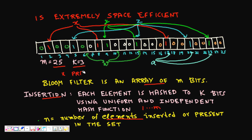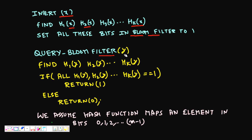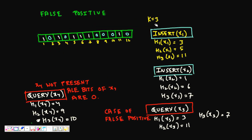Now these bits are set. To query whether x is present, we hash the value and check the bits. For insertion of element x: we compute h1(x), h2(x), ..., hk(x), which give numbers from 1 to m, and set those bits to 1. For a query on element y: we compute h1(y), h2(y), ..., hk(y). If all of those bits are 1, we return 1 (element is present); otherwise we say it is not present.